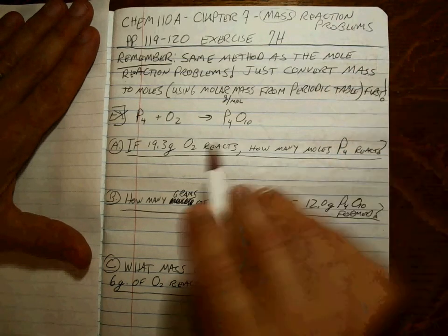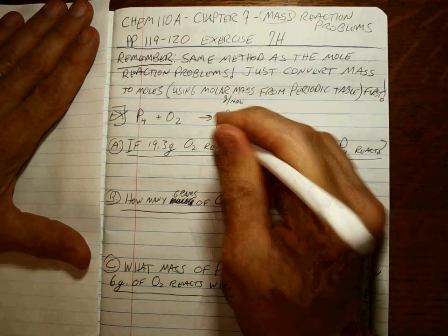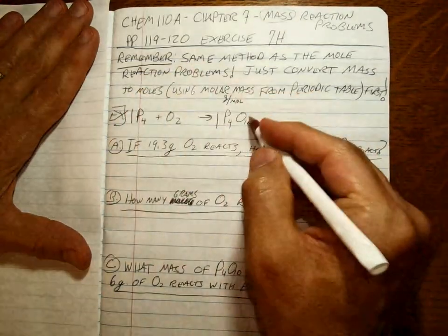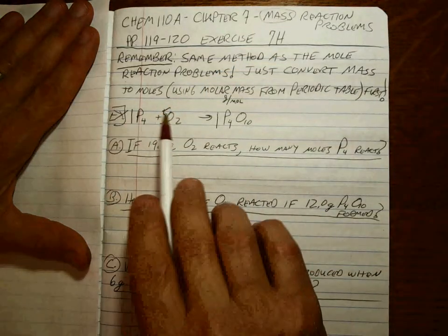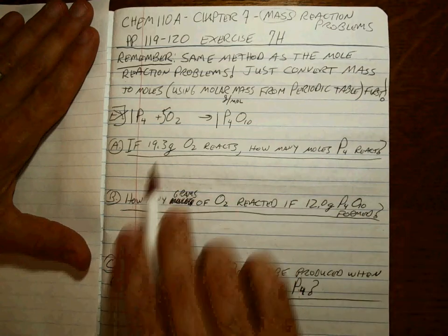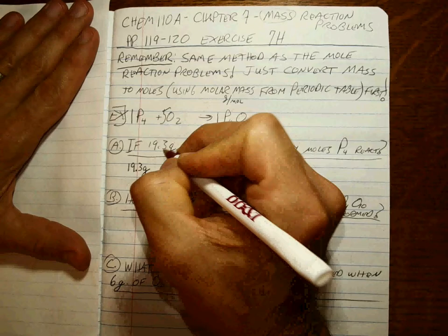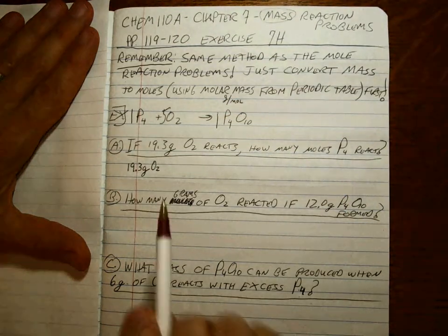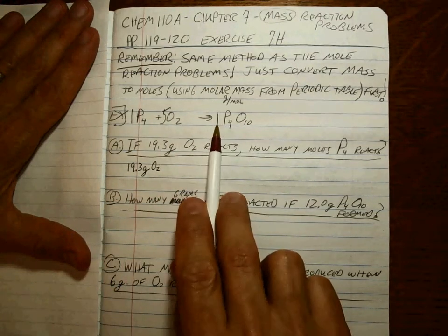Always balance that sucker first. Okay, clearly, this is the biggest, most complicated molecule. There's one of these. There's one of those. And there's five of those. Great. So, it's a one-to-five-to-one ratio. This problem has one number in it. So, you want to write down the number, the unit, and the label.